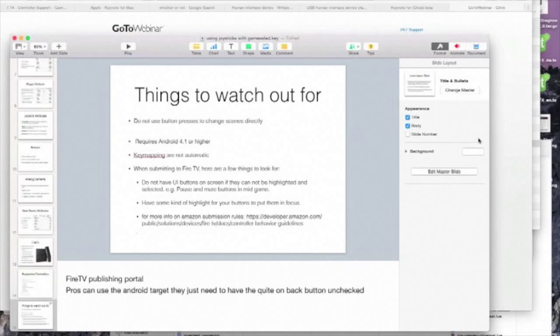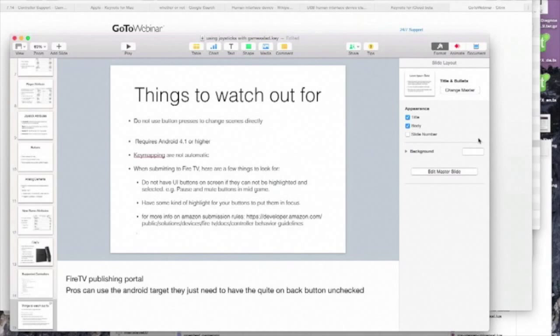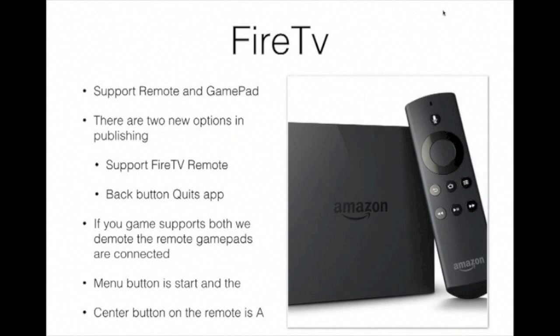How would you reference a button on the Fire TV remote? The Fire TV remote is vertical. The circle ring is up, down, left, and right for the D-pad. The center button is the A button, and the three-line button is the start button. To check if the center button was pressed, you'd use device attributes, player one (or whatever player you're checking), player one dot A button — that tells you when the center button was pressed. The ring is just a D-pad.